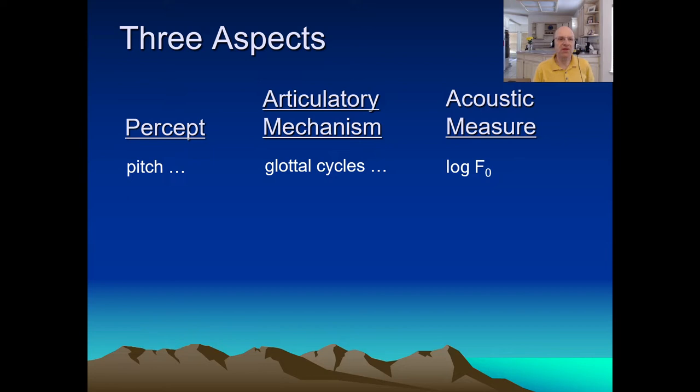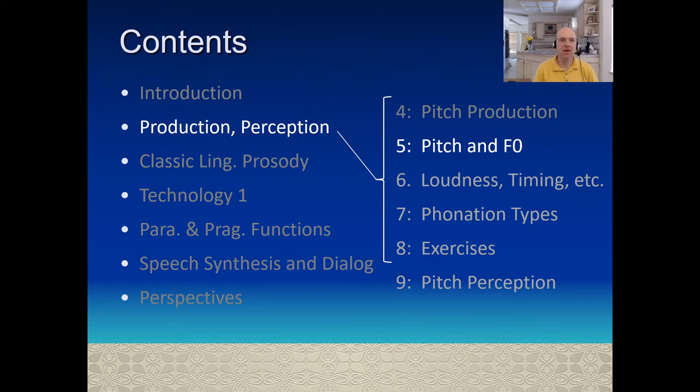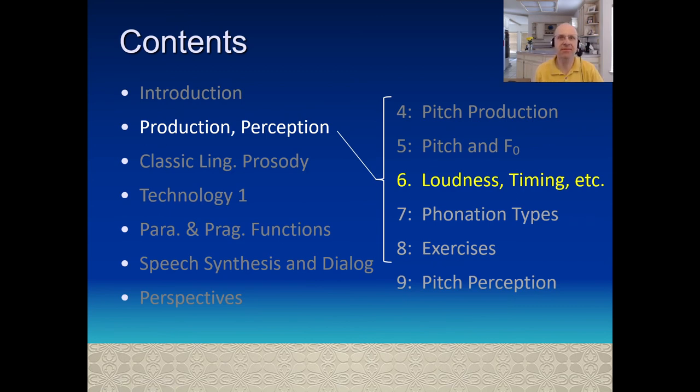For pitch, the discrepancies between the acoustic measure and the percept are relatively mild. For other features, it gets much more complicated. Going forward, for the next two lectures, we're going to focus on the percept and the articulatory mechanisms, leaving the acoustic measures for later. So, to summarize, in this lecture, we've explained the fundamental frequency, or F0, seen how to graph it, and explained that it corresponds to perceptions of pitch, but not exactly. For the next two lectures, we'll set pitch aside for a bit, and we'll complete our tour of prosodic properties.